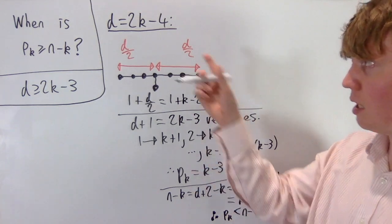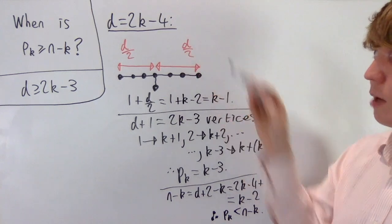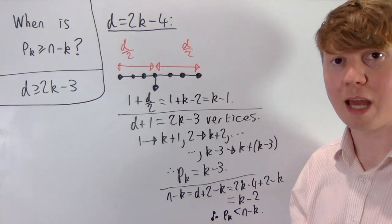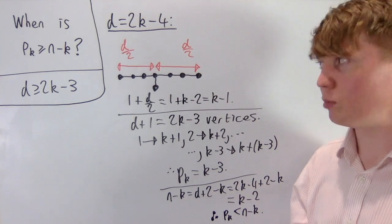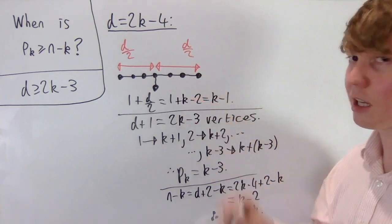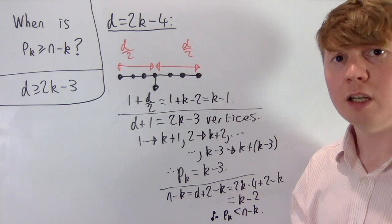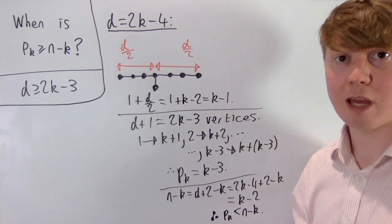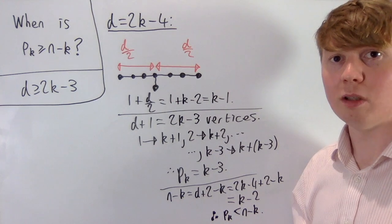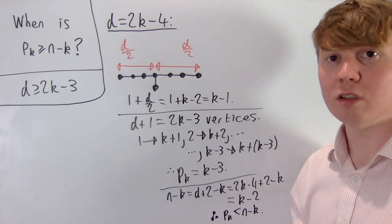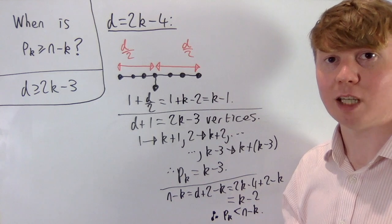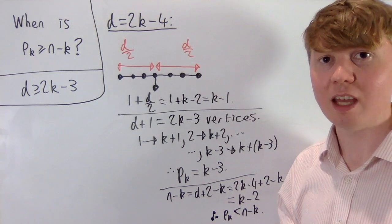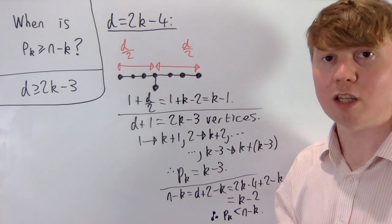This was the case where d is even, but the same argument applies when d is odd, reducing d to 2k−5. We can conclude that the bound d ≥ 2k−3 is optimal: this is exactly what's needed for a tree to have pk ≥ n−k, meaning at least as many paths of length k as the straight-line configuration.